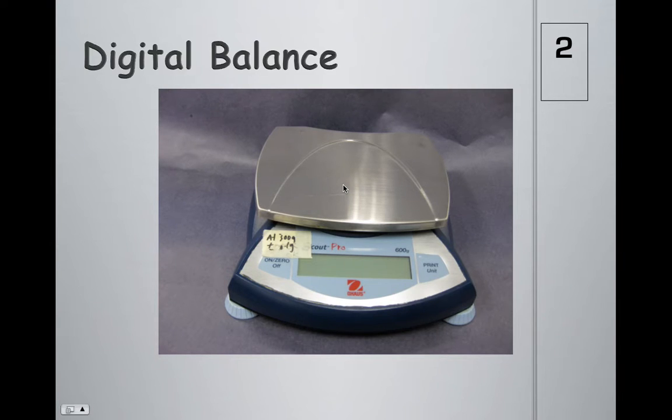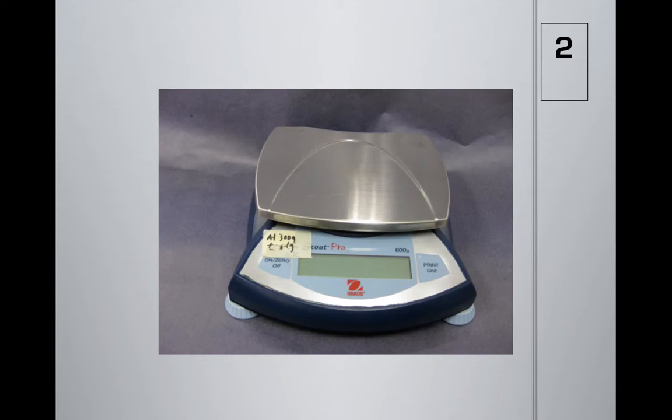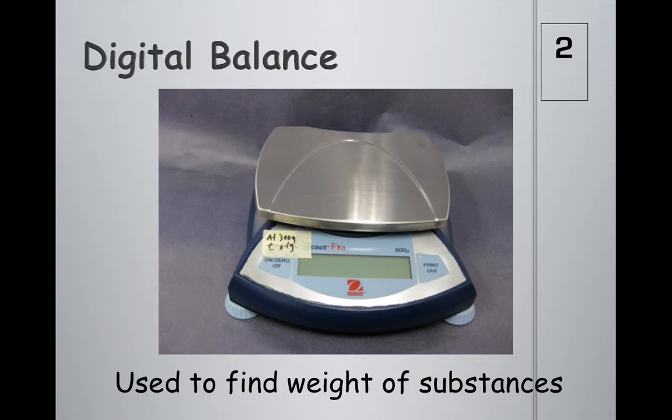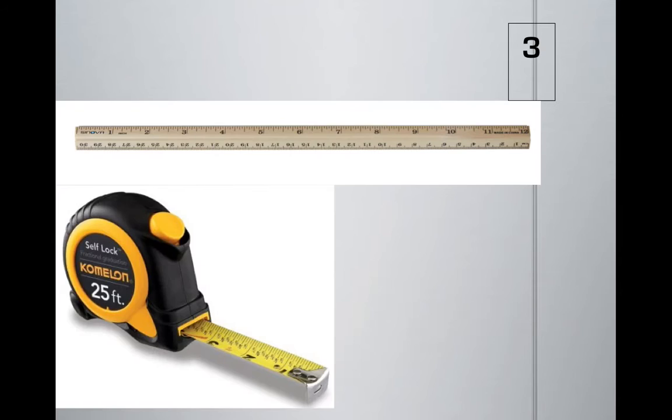The second item is a digital balance, similar to the triple beam balance that we just saw. However, this is digital, so you just put your item on there and it will digitally tell you how much something weighs. We tend to use this for items such as substances like powders or small amounts.